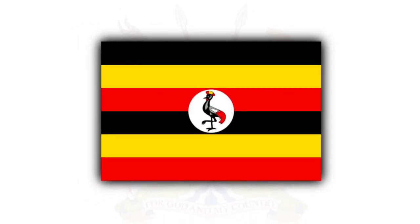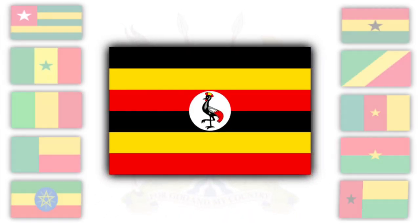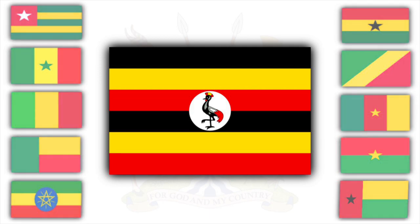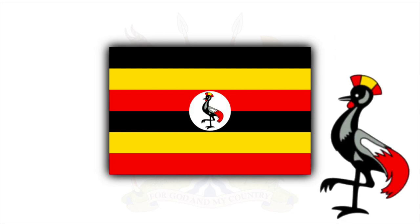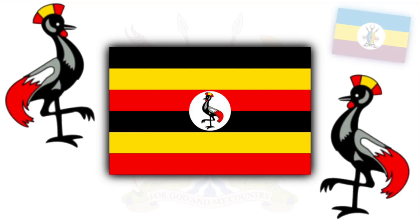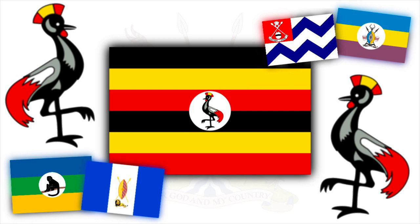The flag of Uganda stands out from a sea of Pan-African green, yellow, and red flags that are commonplace throughout the continent. It has a very nice composition and it's pleasing to the eye. But why is the crane standing on one leg? How did they choose a crane in the first place? And what are those traditional subnational flags in Uganda? In this video, we'll answer these questions and more, so let's begin.